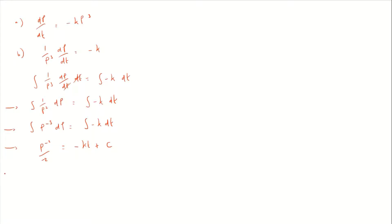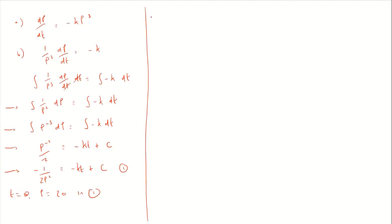Writing the left hand side more neatly: negative one over two p squared equals negative kt plus C, bringing the minus to the front. Using the conditions t = 0 and p = 20 in equation one: negative one over two times 20² equals C. Since k times zero is zero, C equals negative one over 800.